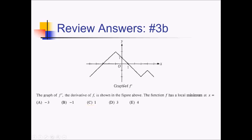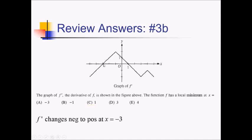For this problem, we're given the graph of f prime and we want to know where f has a local minimum. Be careful — it's tempting to say we have a local min at x equals three, but that's the local min for f prime. We want the local min for f, which means we need where f prime is changing from negative to positive. Looking at our graph, f prime changes from negative to positive right at negative three. So f has a local minimum at x equals negative three — answer choice A.